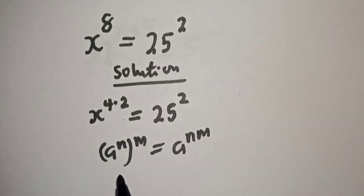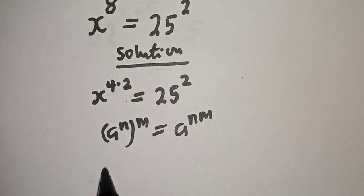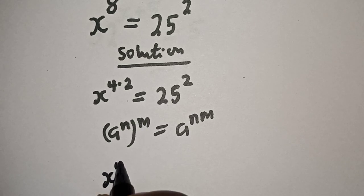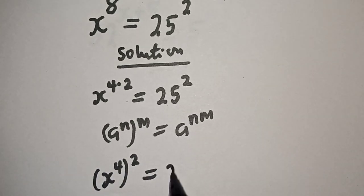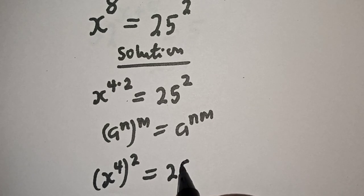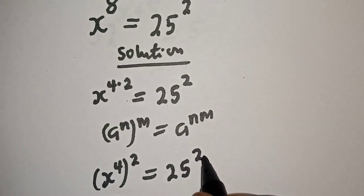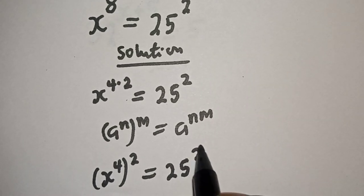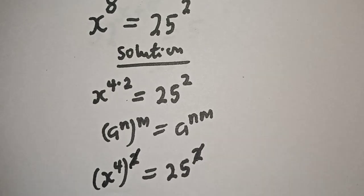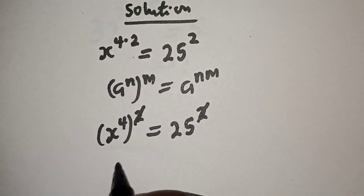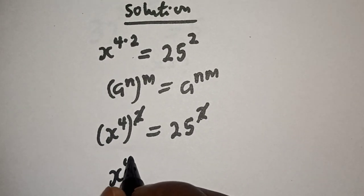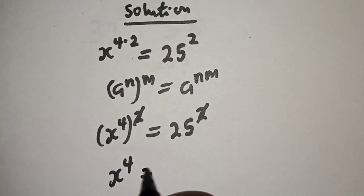Then this can be written as s raised to power 4, raised to power 2, is equal to 25 square. The squares cancel, so we have s raised to power 4 is equal to 25.